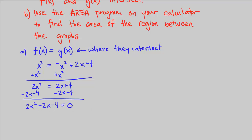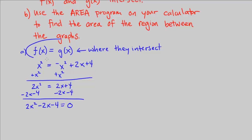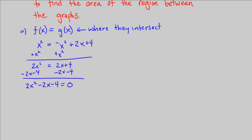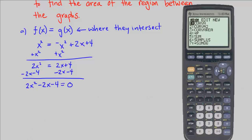From here we want to solve for x, because we know this equation equals 0. Whatever x satisfies this equation is where the two graphs intersect, because that's where f of x and g of x are equal. We can use the quadratic formula or we can use factoring — whichever is easier. Some of you might have the program in your calculator to do the quadratic equation.